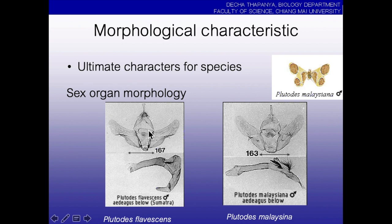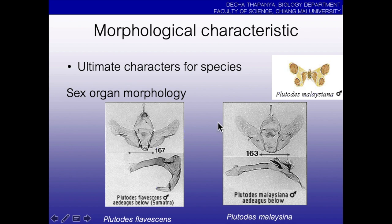This is the male sex organ of Plutodesk florescent. Plutodesk forms like this. But if two specimens have the same wing or same color, but their genitalia are different — one belongs to Plutodesk florescent and the other belongs to Plutodesk malesiana. They are totally different.